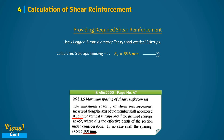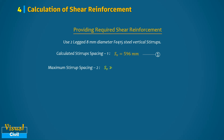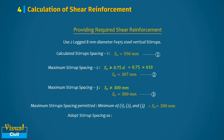According to Clause 26.5.1.5, the maximum spacing of stirrups should not exceed 0.75 times the effective depth, and also should not exceed 300 mm under any circumstances. The second spacing value is 0.75 × 410 = 307 mm, and the third value is 300 mm. The maximum stirrup spacing is the minimum of the three values, which is 300 mm. Therefore, we adopt a spacing of 175 mm for the vertical stirrups.